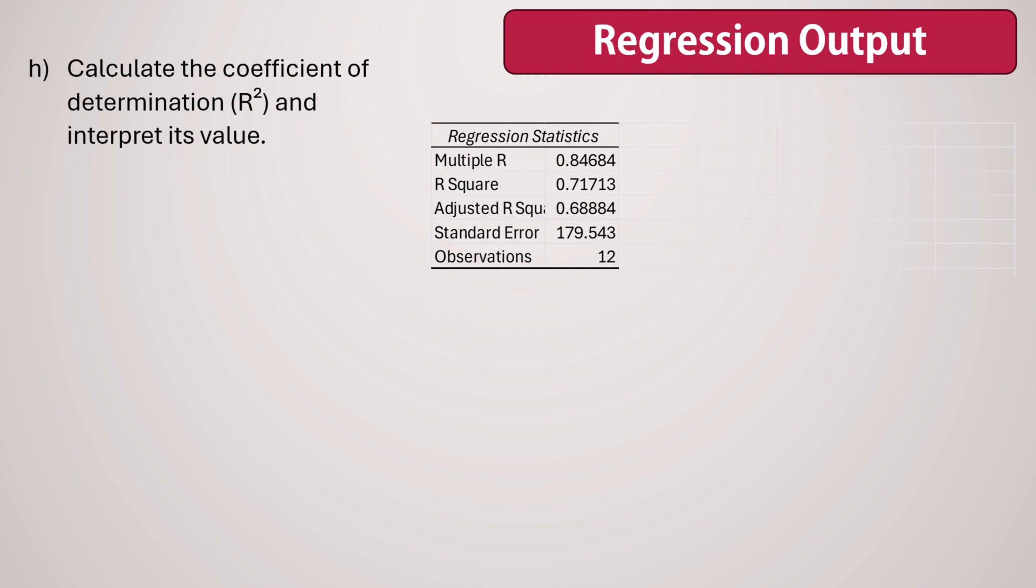Next, we determine and interpret the coefficient of determination R². To calculate R², we can simply square the correlation coefficient R. We can also find it directly in the output here as R², which is approximately 0.717 or 71.7%. What does this mean?